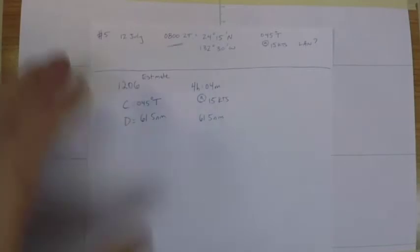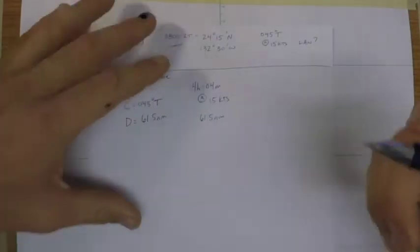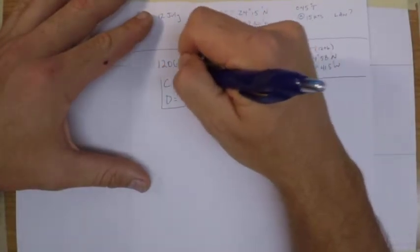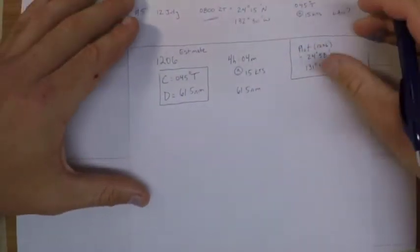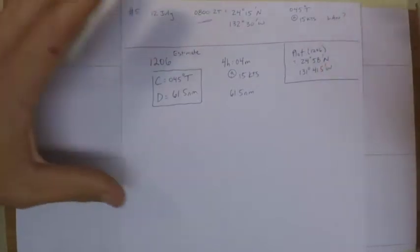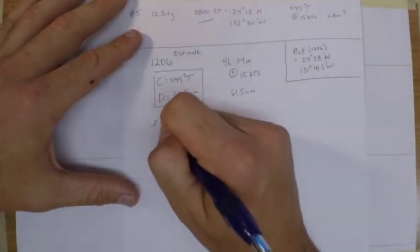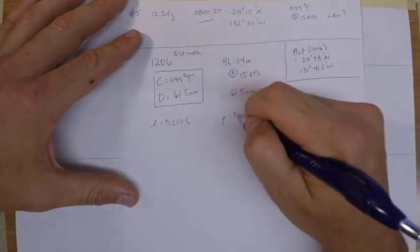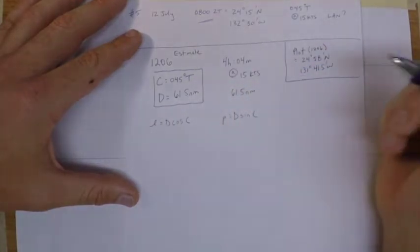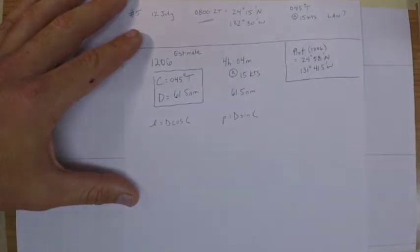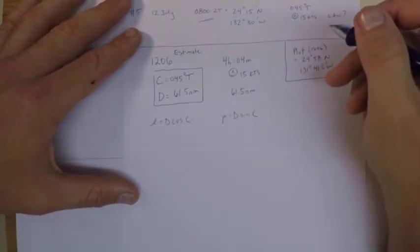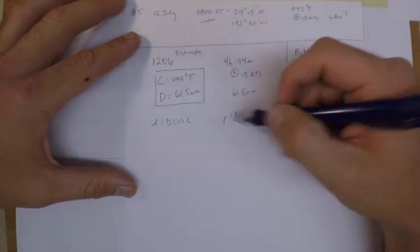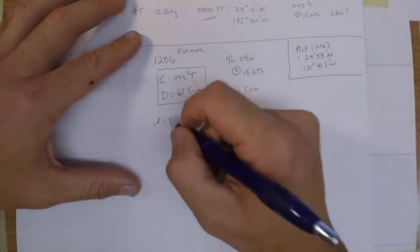So once I have my C and my D, then it's just a matter of using the formulas to determine my L, which is D cosine C, my departure which is D sine C, and then solving out from there. So the neat thing about 45 degrees is the cosine of it is the same for both of these.